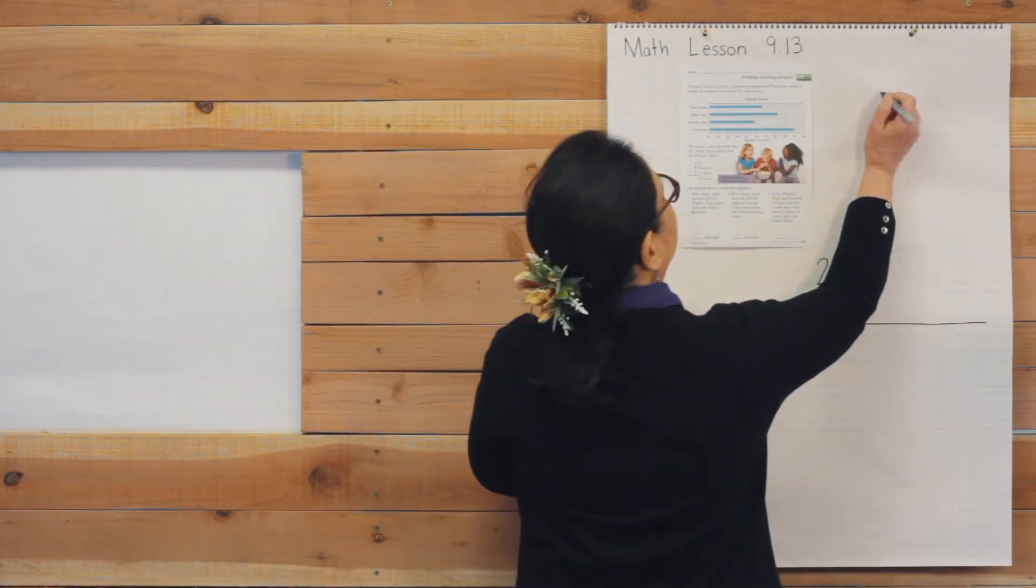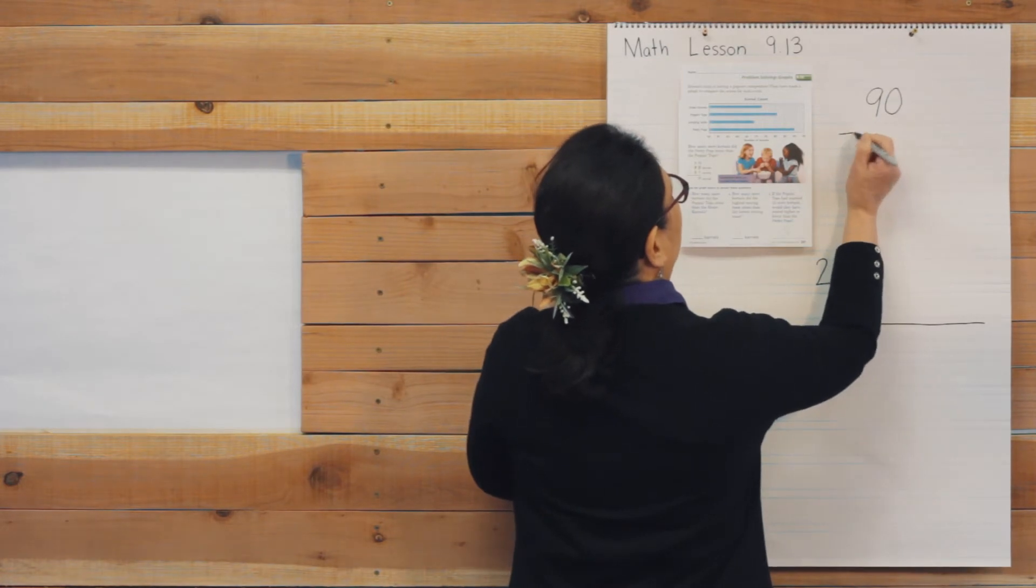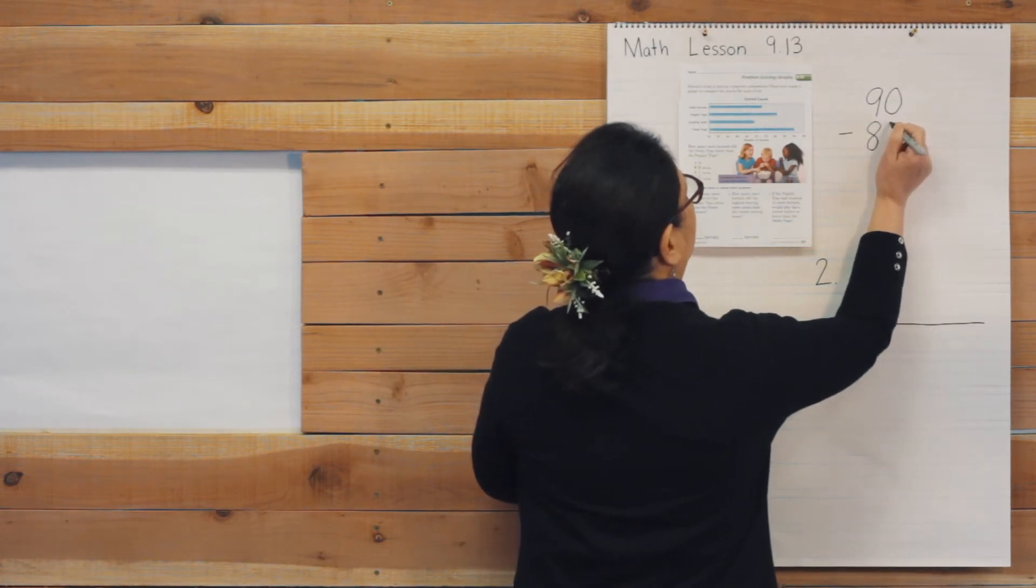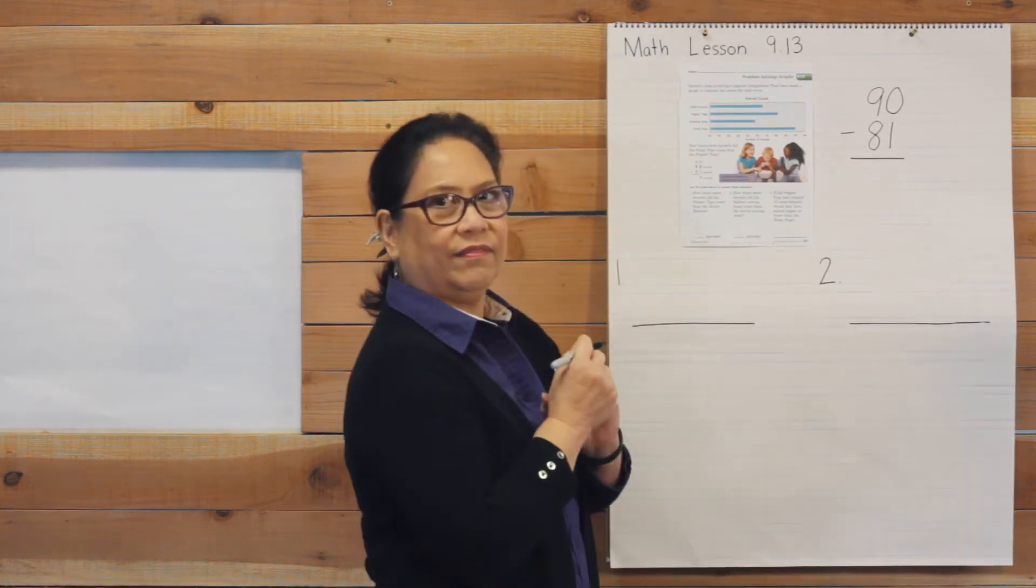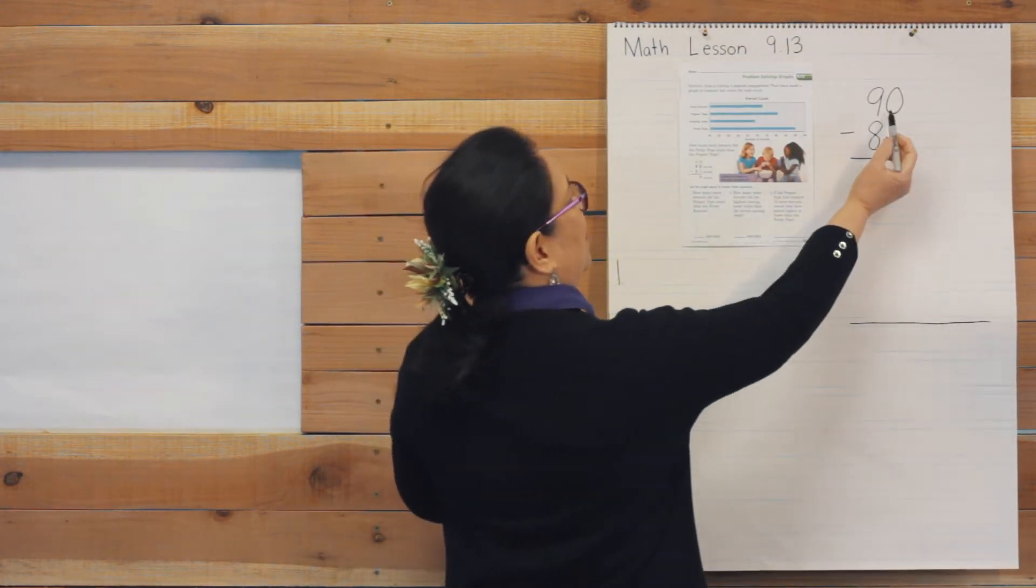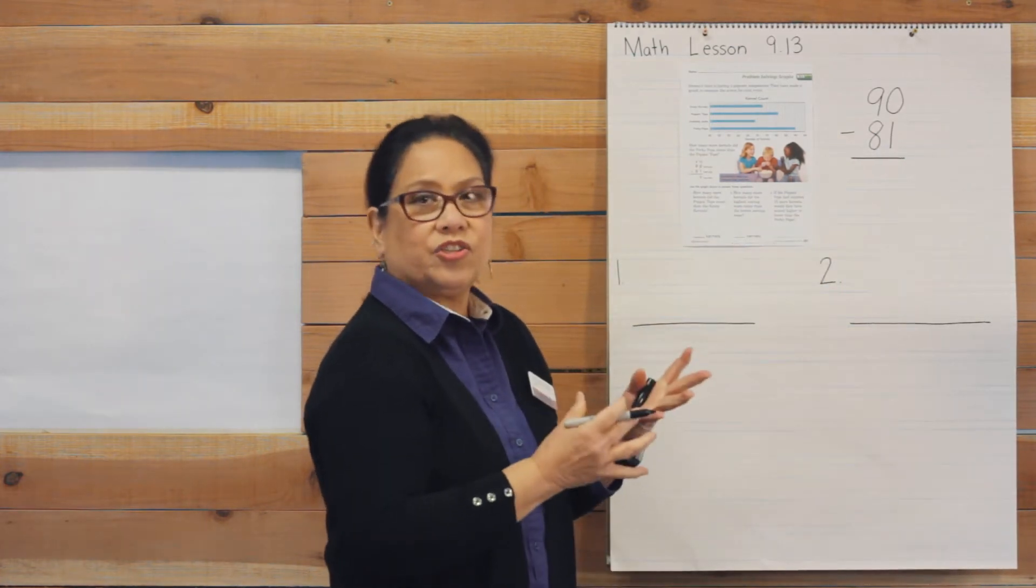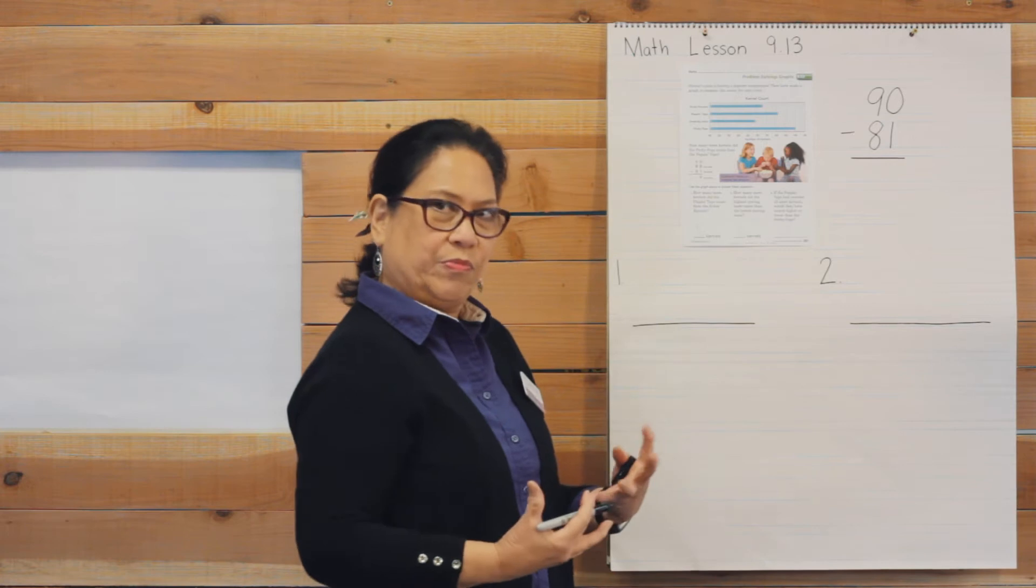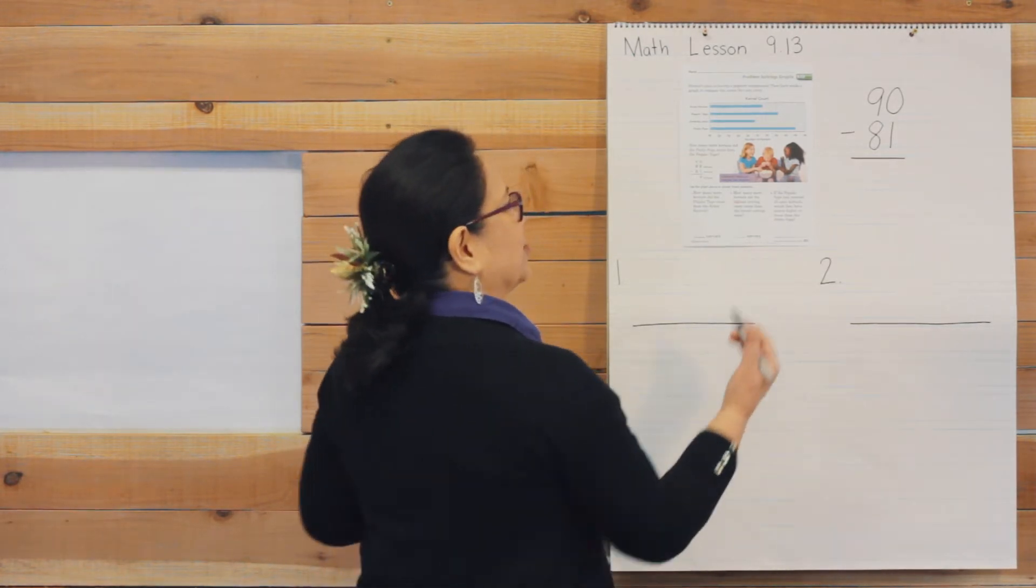So, it is 90 kernels. Takeaway 81. Got it? Can we do 0 take away 1? No, we can't because 1 is a larger number than 0. So what do we do? Regroup. That's right.